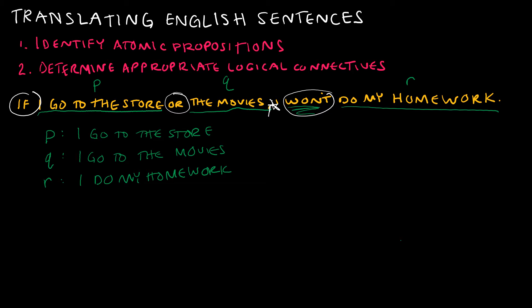Let's take a look at how to represent this using P, Q, and R. Keep in mind when you are translating you need to explicitly write out what proposition represents what phrase. 'If I go to the store or to the movies' becomes P or Q. Then 'I won't do my homework' — R is 'do my homework,' so we say not R. The full translation is: if P or Q, then not R.